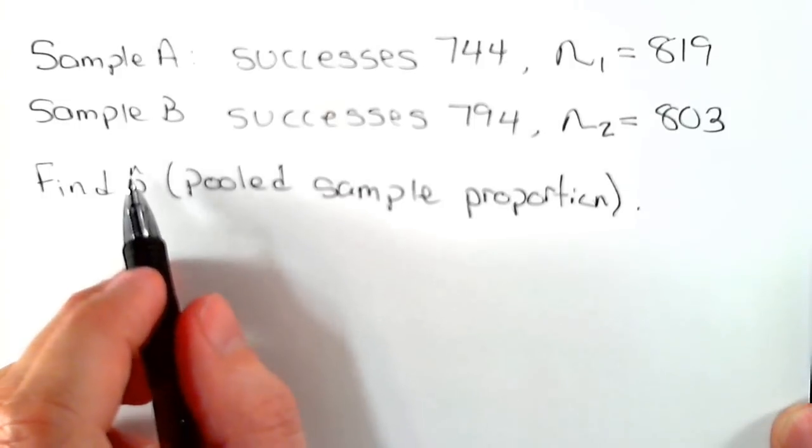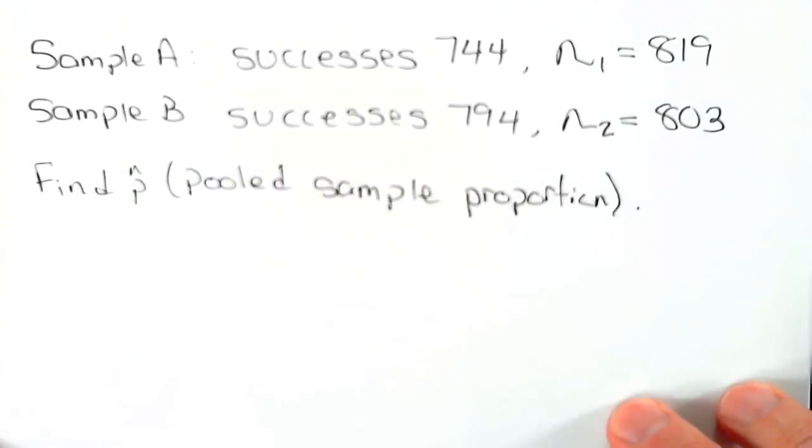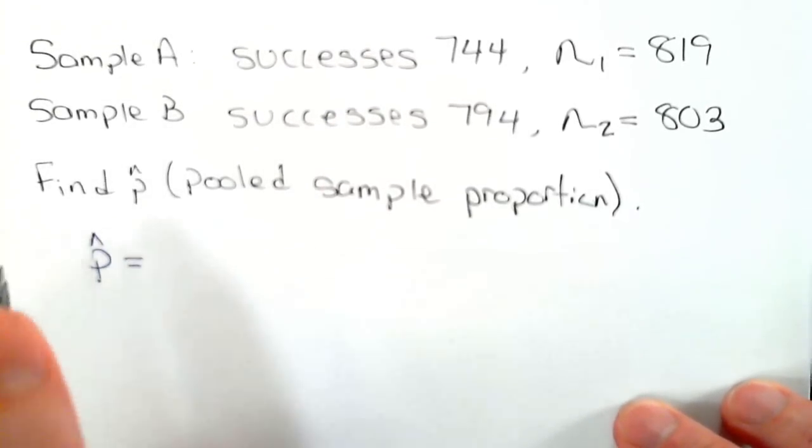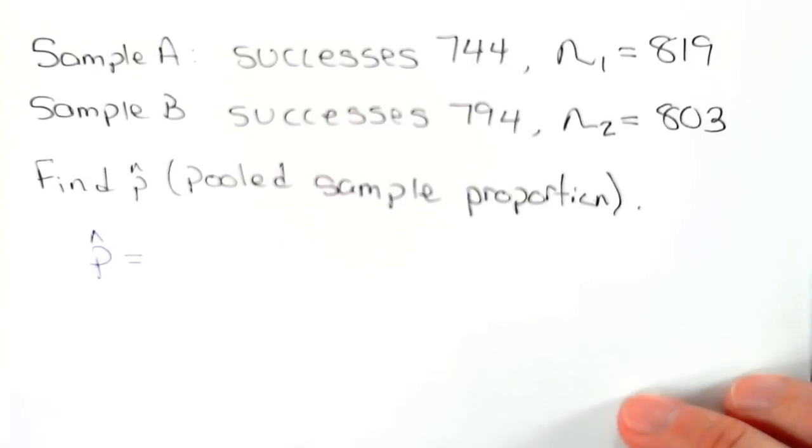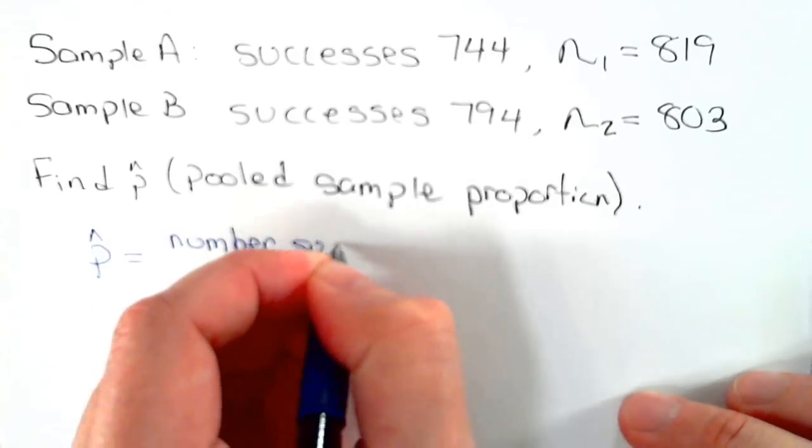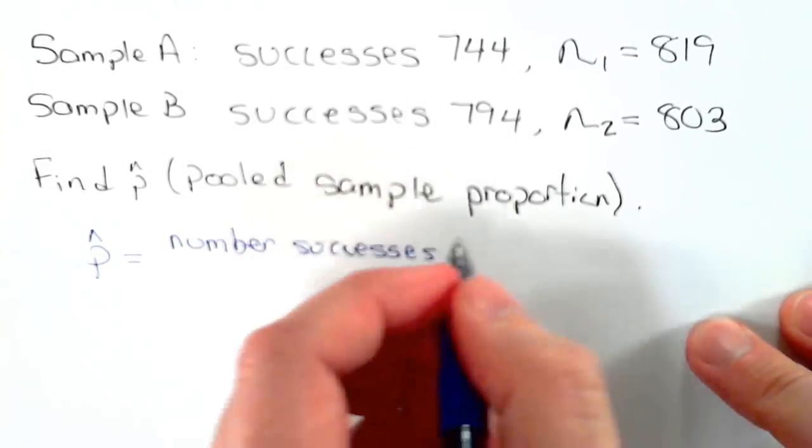This is the pooled sample proportion. The pooled sample proportion p hat is equal to the number of successes in both samples.